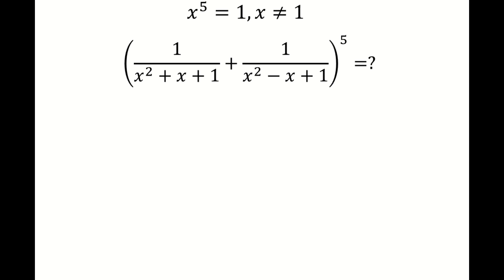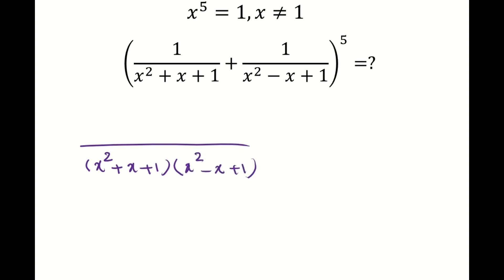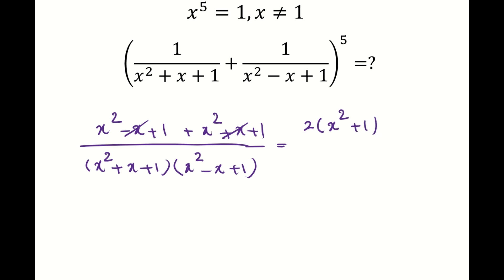To do this, I'm going to start by simplifying — combining both terms into a single fraction. For the top of this single fraction I'm going to have (x² − x + 1) plus (x² + x + 1). You can see that the x terms cancel, and I can write the numerator as 2 times (x² + 1).